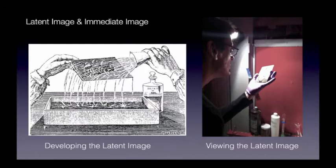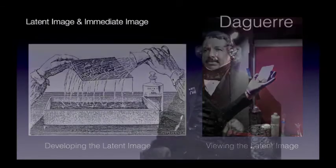For the daguerreotype, a piece of copper was plated with silver, and then the plate was sensitized with iodine before it was put into the camera — a silver iodide compound, a silver salt, and therefore light-sensitive. After the exposure, you couldn't see anything on the plate, and it wasn't until the plate was put over a tray of heated mercury that the action of the light on the silver iodide plate was made visible, resulting in an image of the scene in front of the camera.